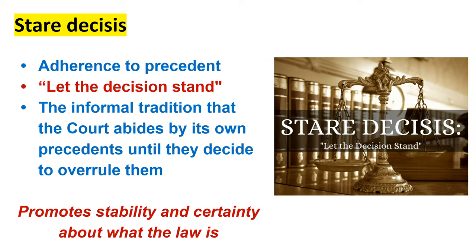Stare decisis also provides certainty to the lower courts — saying, yes, thumbs up, you did it right. It shows the lower courts they ruled the way the Supreme Court wanted them to rule. A district court getting a grant of stare decisis from a circuit court of appeals is basically a thumbs up saying, you argued this case and you did it in a way we agree with — we're not even going to hear this case, we don't need to, because you did it right the first time.